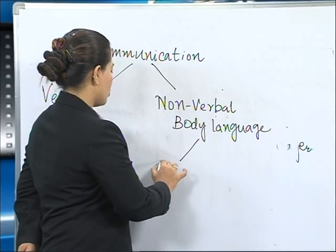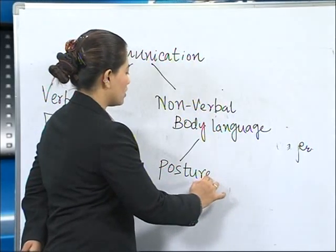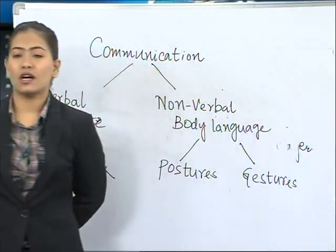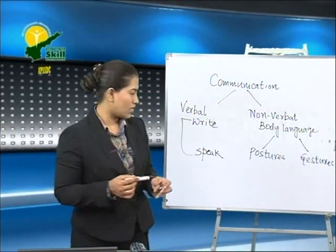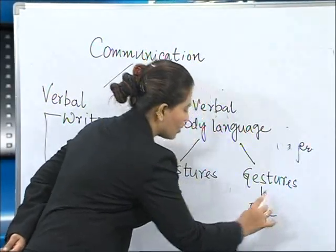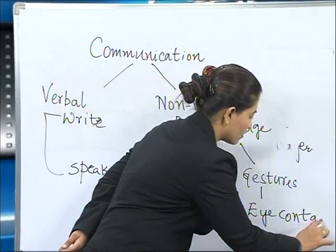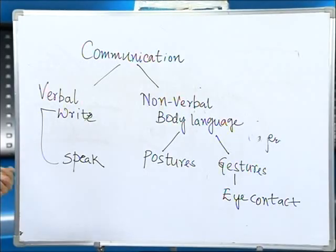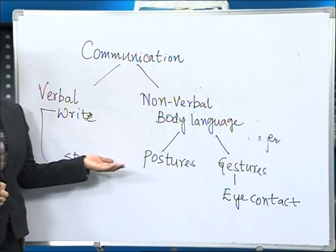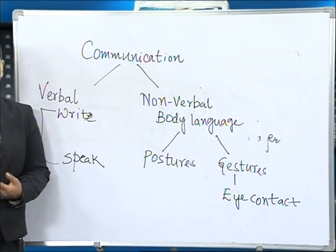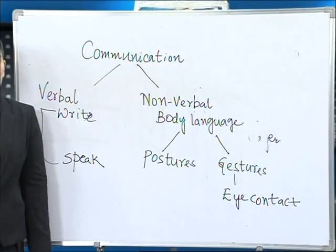Postures involve your hand movements and body movements. Gestures include your expressions and eye contact. So in communication: verbal means writing and speaking, while non-verbal is body language communicated through postures and gestures. One thing to keep in mind under gestures is your eye contact — ensure that you have the right eye contact.